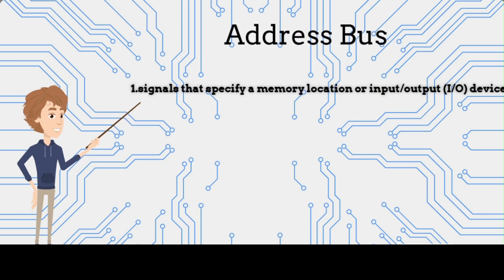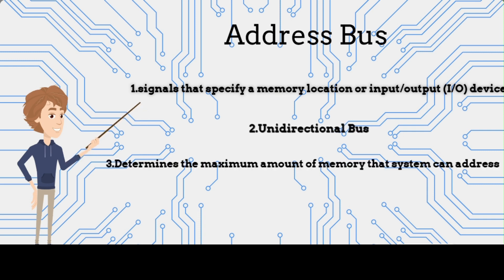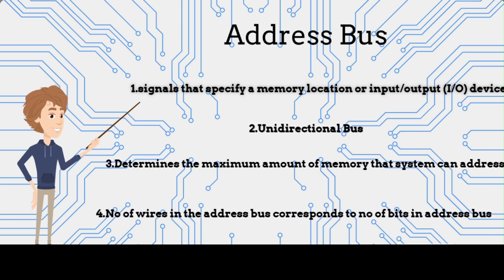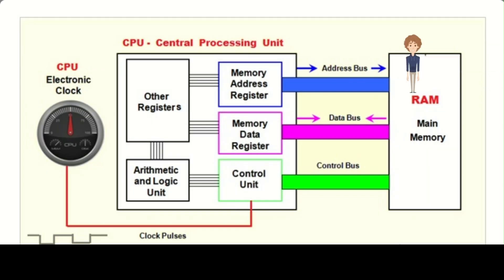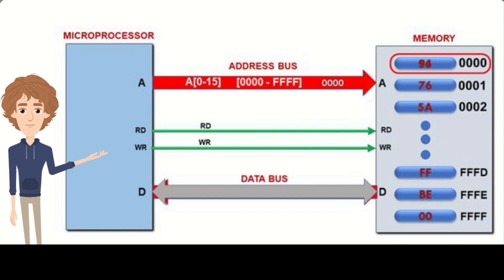An address bus is a component of a computer's architecture that is responsible for transmitting memory addresses between various hardware components. It is an essential part of a computer's ability to access and store data. The address bus is a set of wires that allows the processor to communicate with memory and other input-output devices, such as hard drives or network adapters. It consists of a certain number of wires or lines depending on the computer's architecture, and each wire or line carries a binary address.